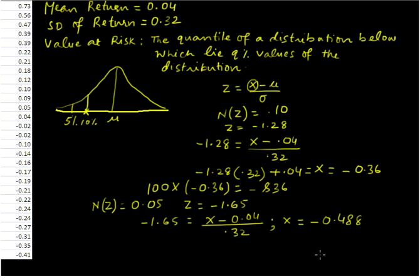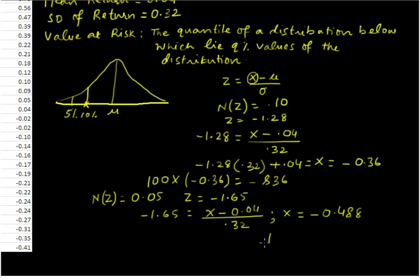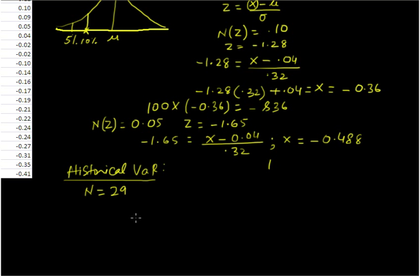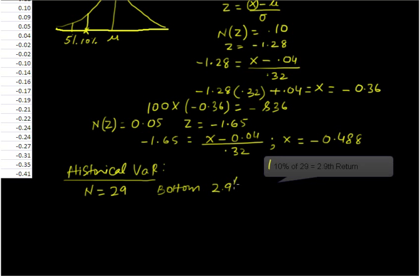That is all for the normal distribution VaR. Let us now move to the historical VaR. The way we do it is by first counting the number of observations in the data set — in this data set the number of observations is 29. For a 10% VaR we need to locate the bottom 2.9th return from our data.